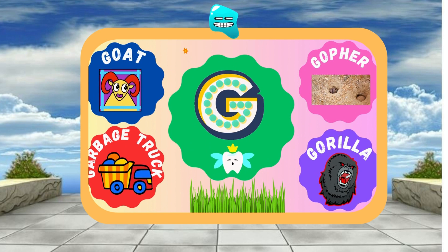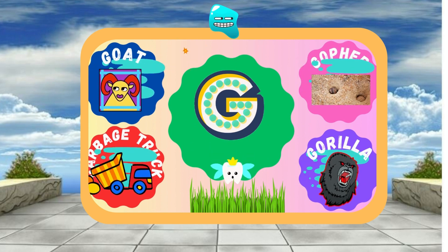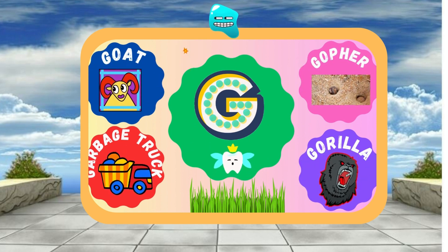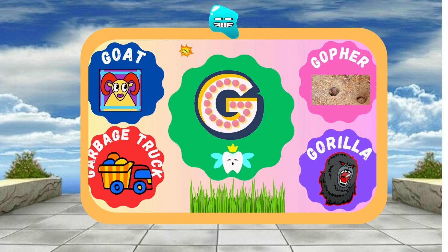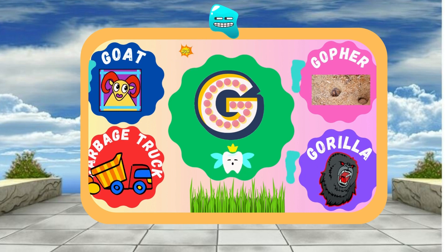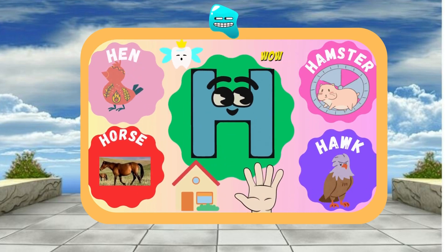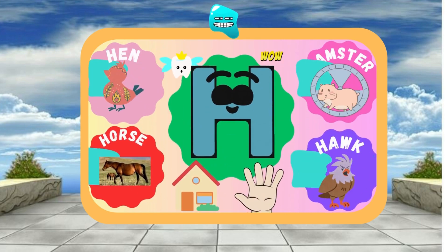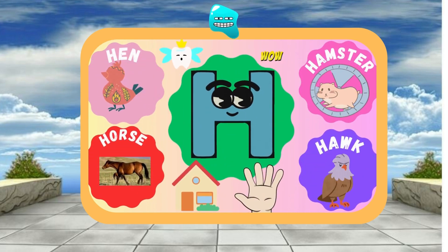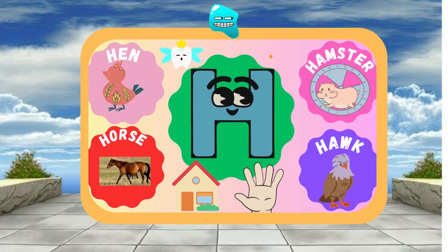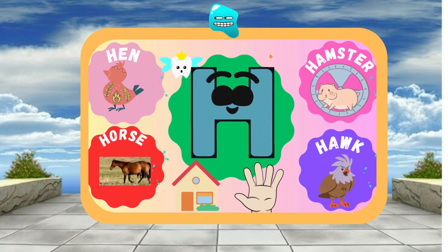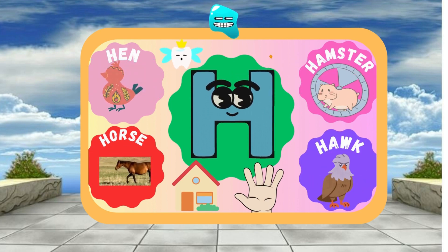G is for Goat — G, g, Goat. G is for Grass — G, g, Grass. H is for House — H, h, House. H is for Hand — H, h, Hand.